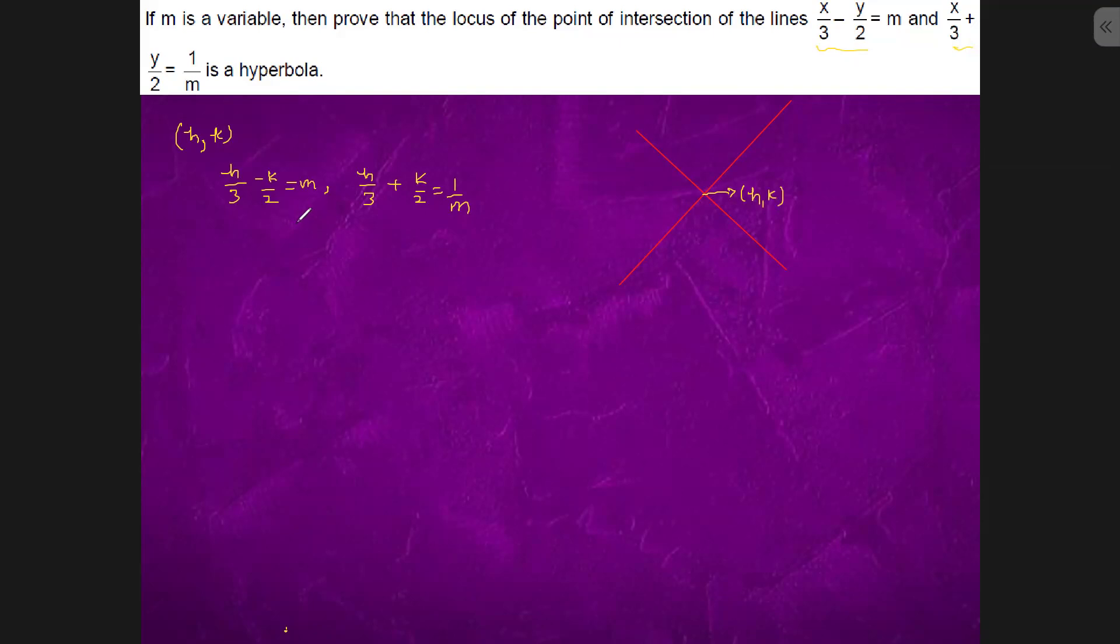So what we could do is multiply both equations. It will come out to be h square by 9 minus k square by 4 equals 1.